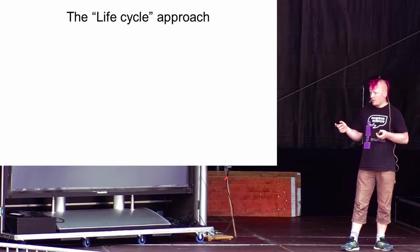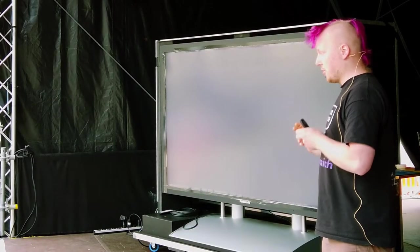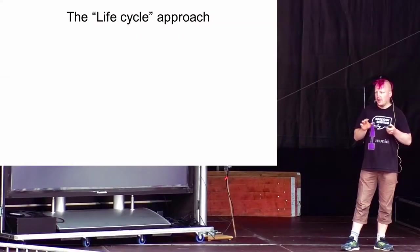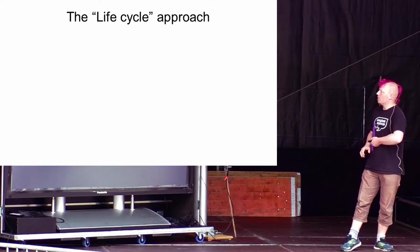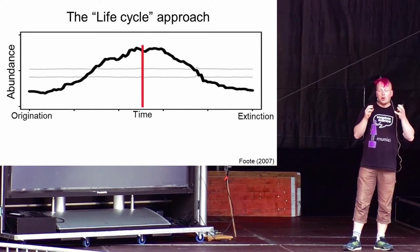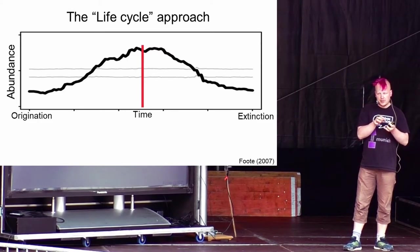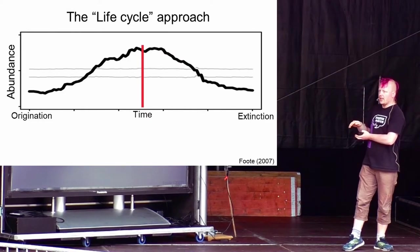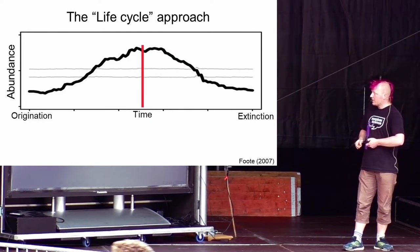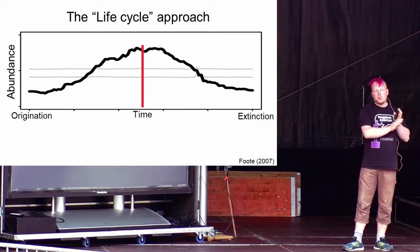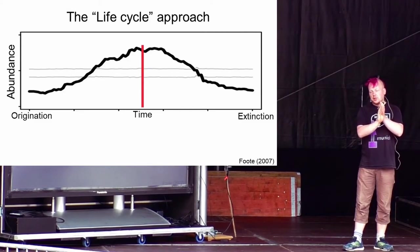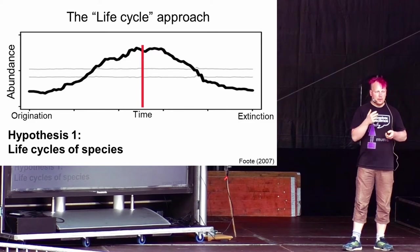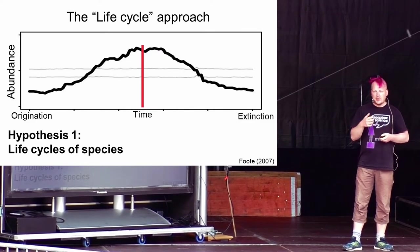Another approach that I will now continue talking about is the so-called life cycle approach. I will focus on this just because this is my research topic. It is based on a very simple empirical pattern. The abundance of a species, so how common a species is, is very low when the species first appears, and then it slowly increases until it reaches a maximum at the middle of its lifespan, and then it slowly decreases again until it is going extinct. What is really striking is that this pattern is really symmetrical.